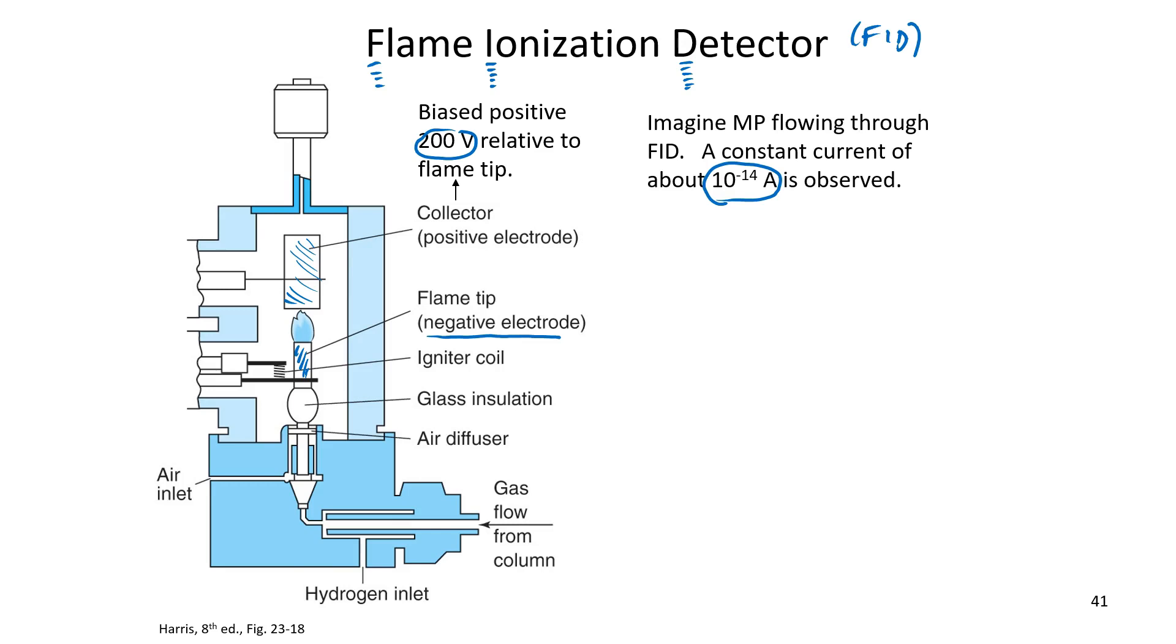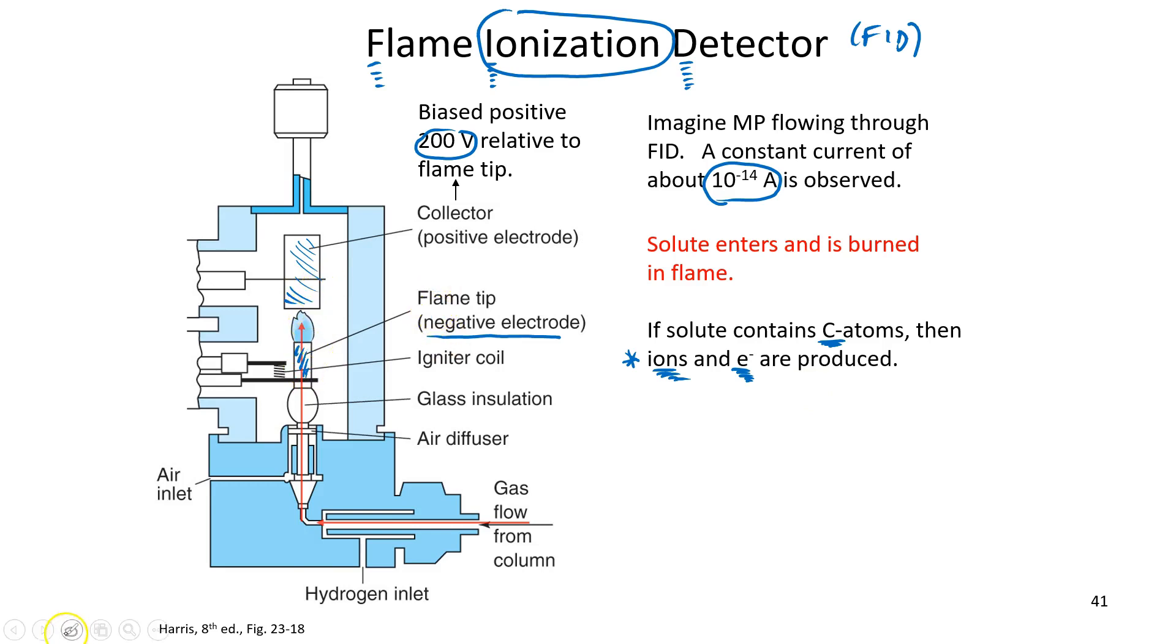And what happens when our solute enters? It gets burned. And if that solute contains carbon atoms, ions and electrons are going to be produced, hence the name ionization. And what do you think the presence of these ions and electrons do to the current across the flame tip and the collector electrode?